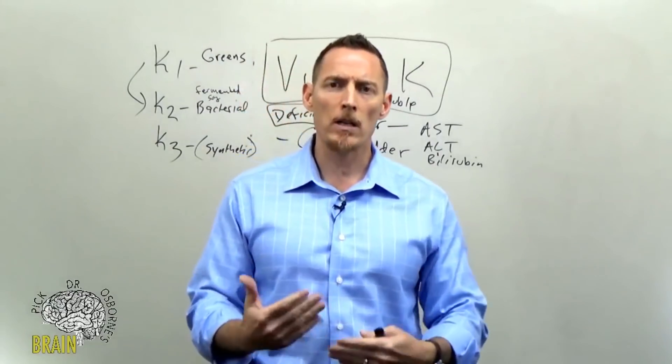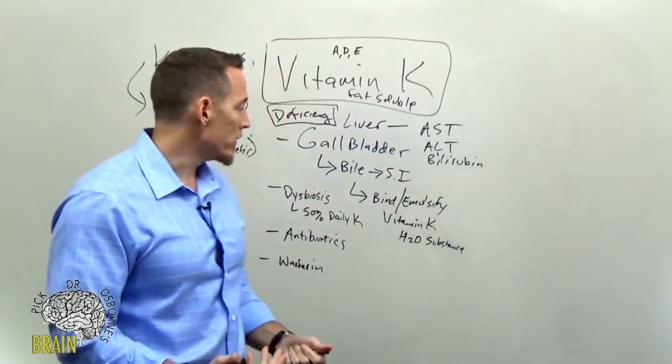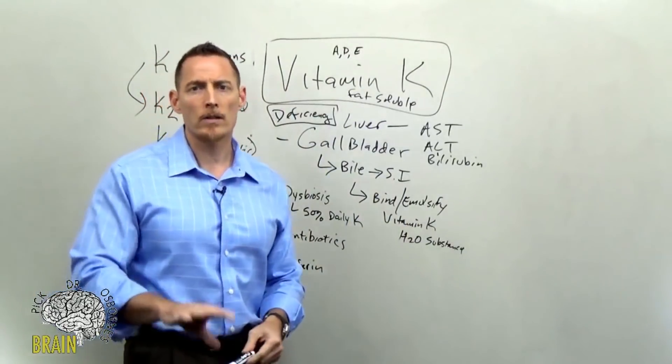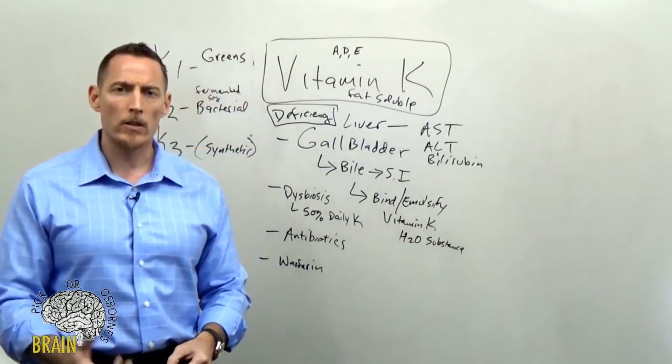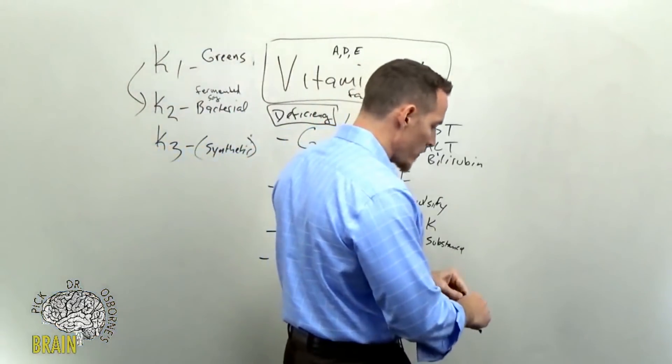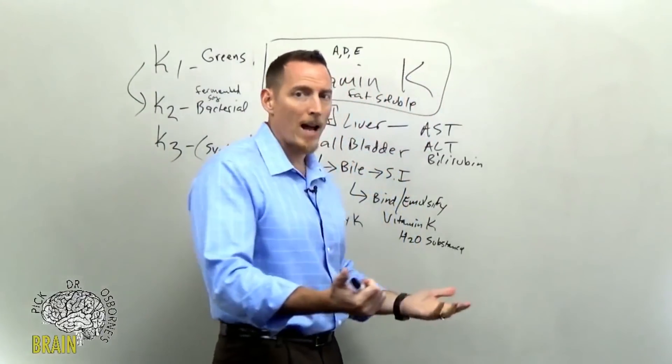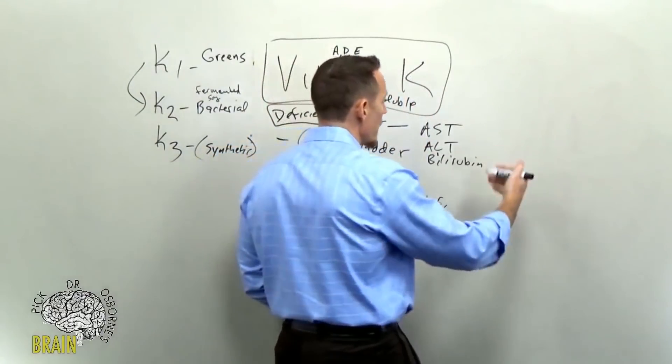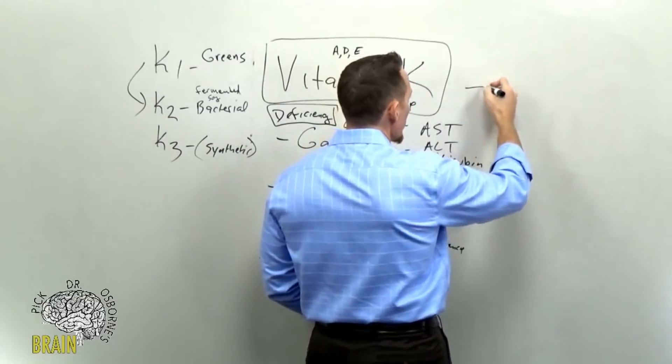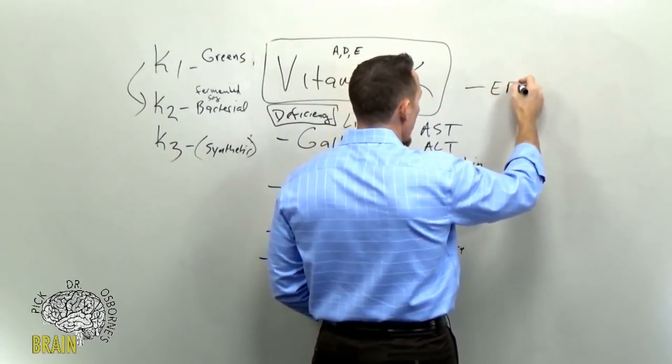That second opinion is important. Remember earlier I wrote on the board, I said there are a number of different things that can naturally thin the blood. So what are those things? Not warfarin—warfarin was originally created, it was a rat poison, and it was discovered that that's how it worked.